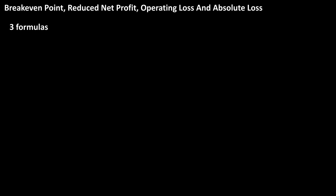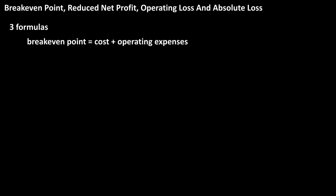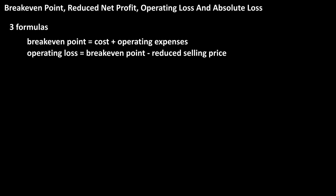There are three formulas to keep in mind. The formula for break-even point is: break-even point equals cost plus operating expenses. The formula for operating loss is: operating loss equals the break-even point minus the reduced selling price. And the formula for absolute loss is: absolute loss equals the cost minus the reduced selling price.